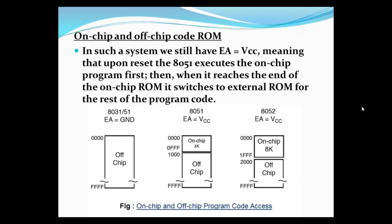On-chip and off-chip code ROM size is different for different kinds of microprocessors. When EA equals VCC, upon reset the 8051 executes the on-chip program first, and when it reaches the end of the on-chip ROM, it switches to external ROM for the rest of the code. For 8031 and 8051, when EA is grounded, it only uses the off-chip ROM. In 8052, when EA is VCC, it uses the on-chip program first, then the off-chip.